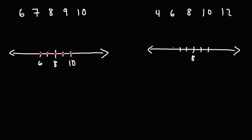But notice that the data in data set 2 is more spread out. It ranges from 4 to 12. So because the data set on the right is more spread out, we should expect that it will have a higher variance value. And let's prove it by calculating the variance of these two data sets.